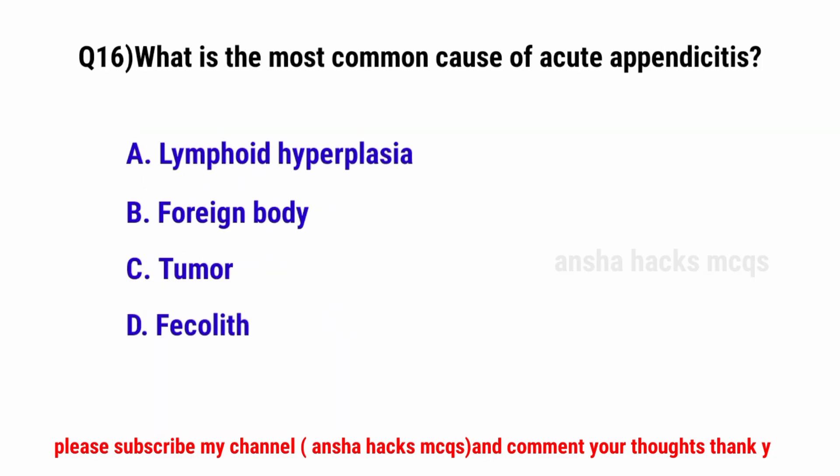Question No. 17. What is the most common cause of acute appendicitis? The correct option is D: Fecalith (obstruction).